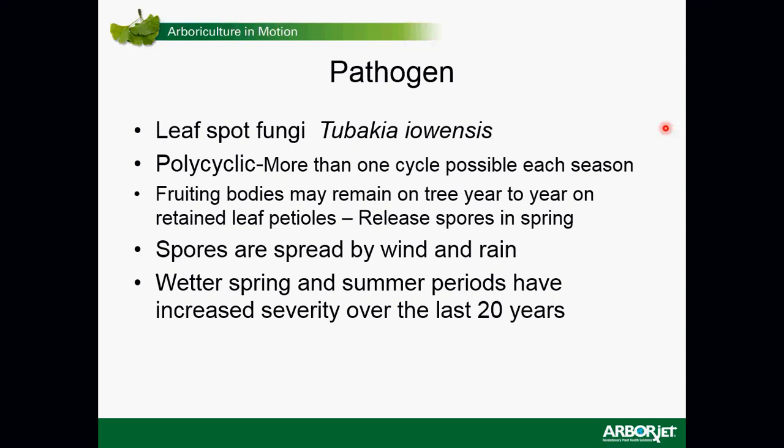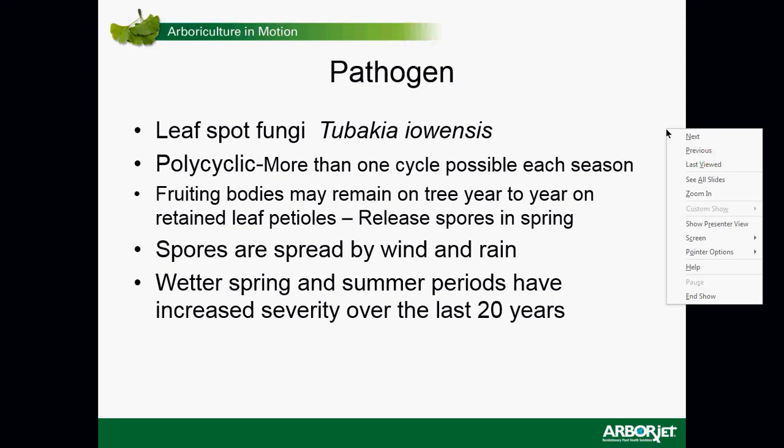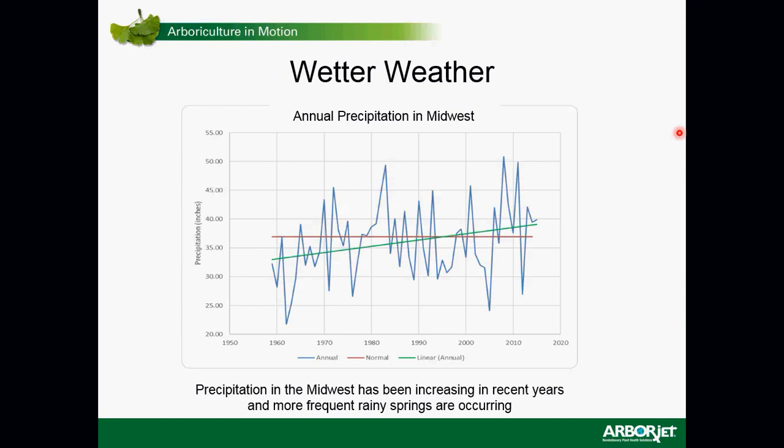Annual precipitation in the Midwest has been increasing over the last 30 to 40 years. If you average out the dry years and wet years, generally speaking precipitation is increasing — more frequent wet, rainy springs and summers. Of course, we all know that's a good recipe for a pathogen: any time you have the host, the pathogen, and conditions like moisture and cool wet weather, you're going to have spread of disease.